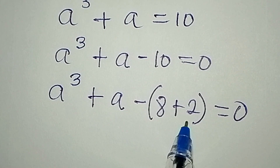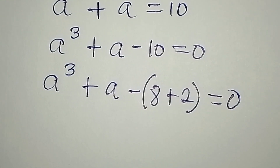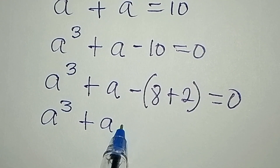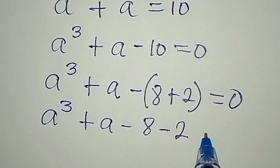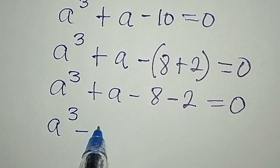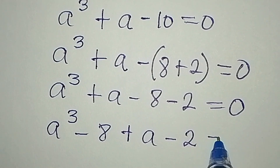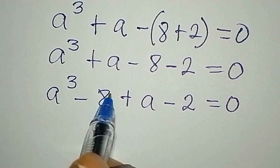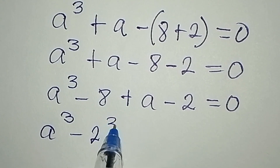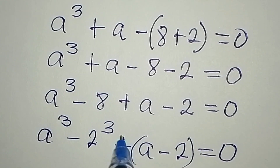You might ask why not use 5 plus 5 — but you cannot express 5 in the required form, so you cannot use 5 plus 5. Now let's open this so we have a to the power of 3 plus a minus 8 minus 2 equals 0. Let's regroup so that a to the power of 3 minus 8 are grouped together, and then we have a minus 2 equals 0. Now 8 is 2 to the power of 3, so I can write a to the power of 3 minus 2 to the power of 3, then plus a minus 2, equal to 0.